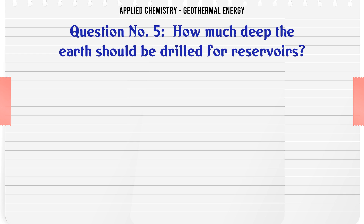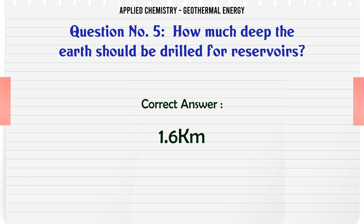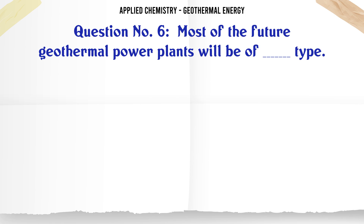How deep should the earth be drilled for reservoirs? A: 1 km, B: 1.5 km, C: 1.6 km, D: 1.7 km. The correct answer is 1.6 km.